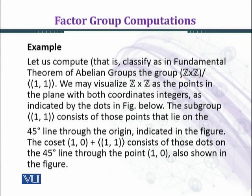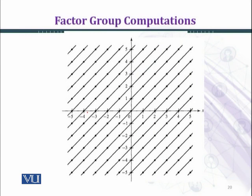We consider Z cross Z over the cyclic group generated by (1,1). We may realize Z cross Z as the points in the plane with both coordinates integers, as indicated by the dots in the figure. Each dot represents a point whose first and second coordinates are both integral values.